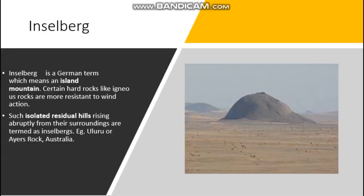Next rock is the inselberg. What do you mean by inselberg? In German, it means island mountain — a separate mountain. Certain hard rocks like igneous rocks are more resistant to wind action. Such isolated residual hills rising abruptly from their surroundings are termed as inselberg. Isolated means separated. We can see this in Uluru or Ayers Rock in Australia. On seeing this picture, you can clearly understand how this rock was formed.